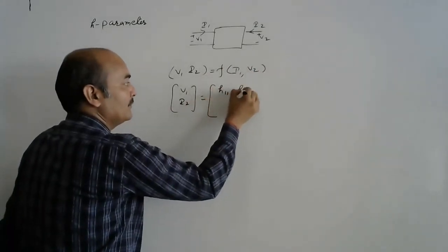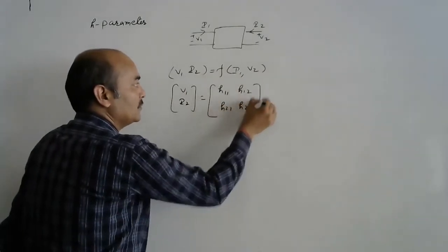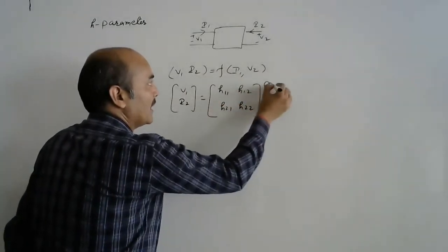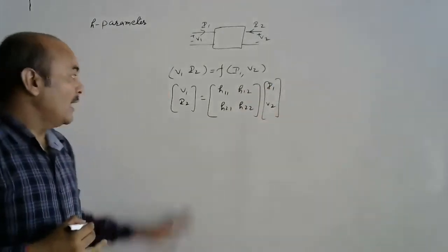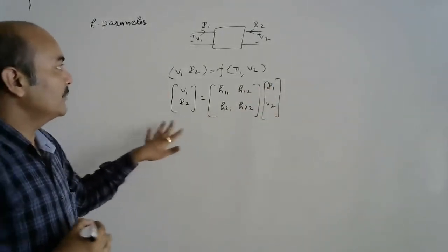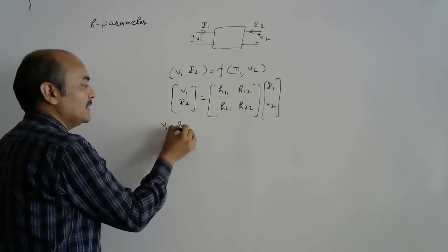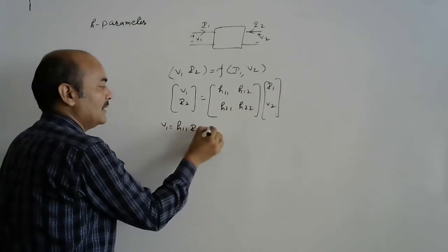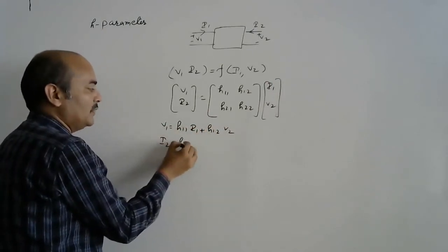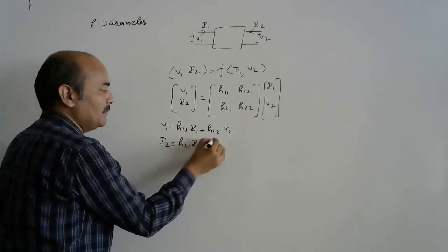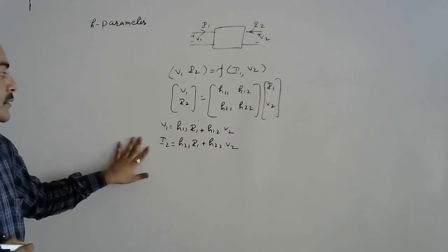We relate V1 and I2 to I1 and V2 using the H parameters H11, H12, H21, and H22. The basic equations are: V1 = H11·I1 + H12·V2, and I2 = H21·I1 + H22·V2. These are the two fundamental equations.